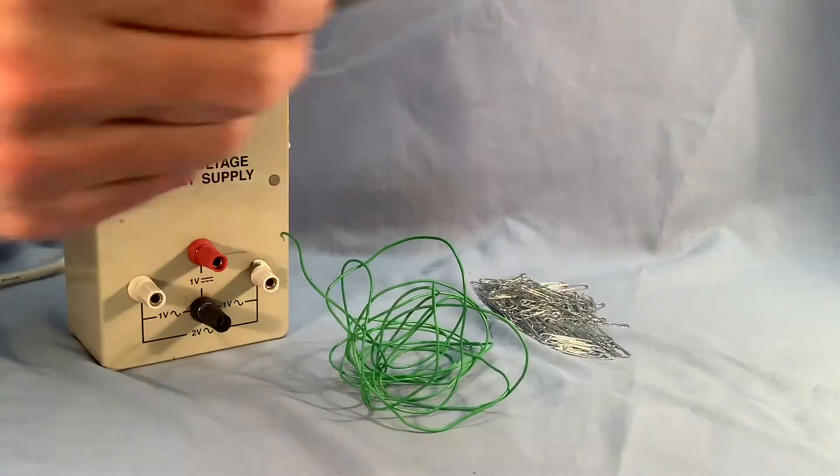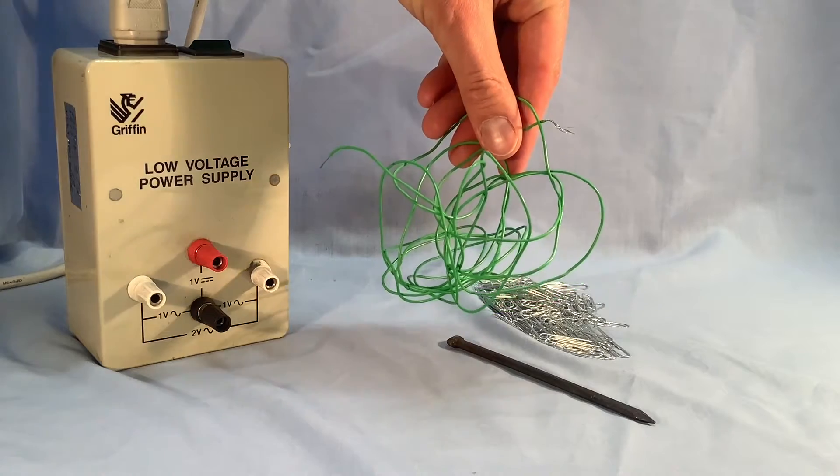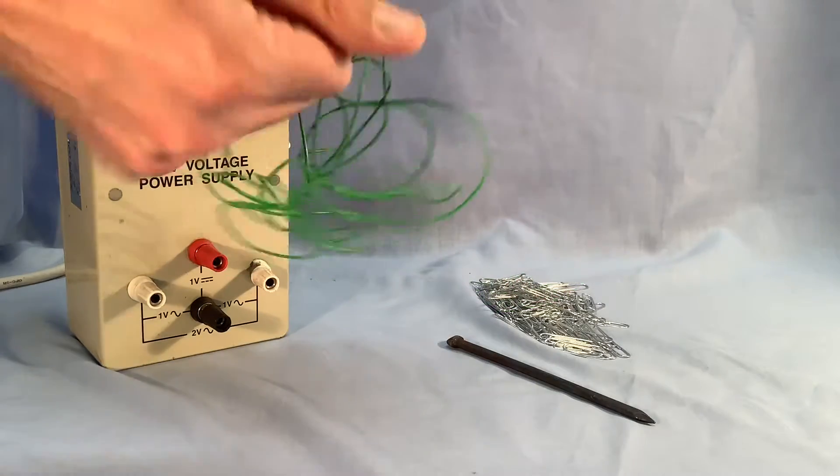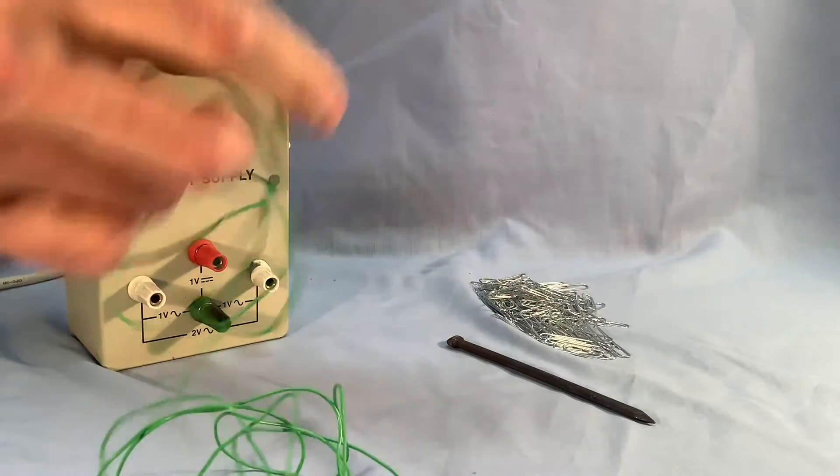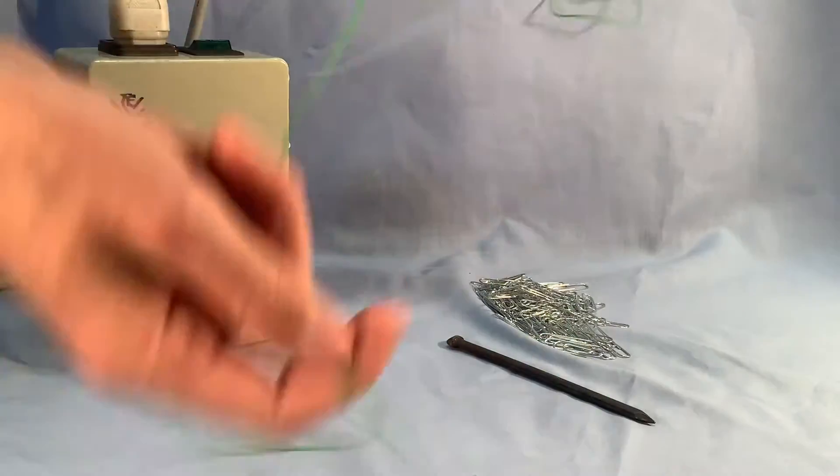I'm going to make an electromagnet using an iron nail and some insulated wire. So the first thing to do is to make sure that my wire isn't tangled up, and that looks okay.